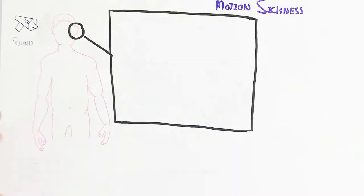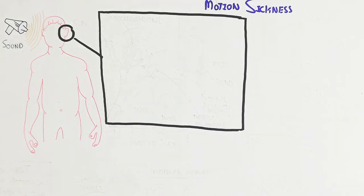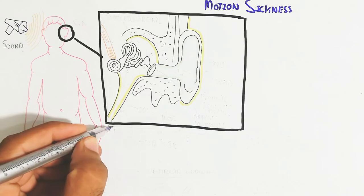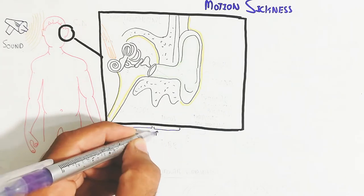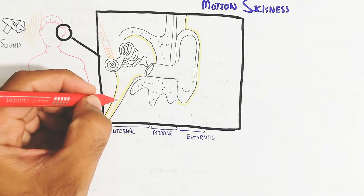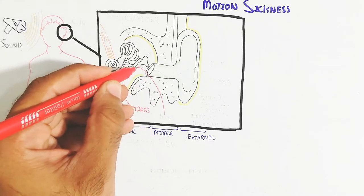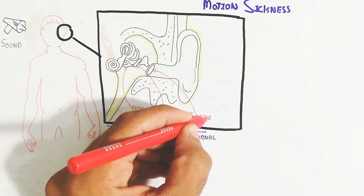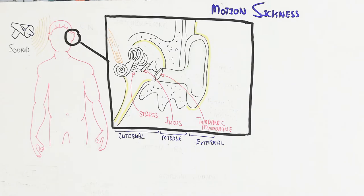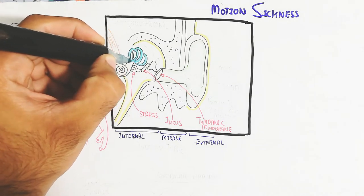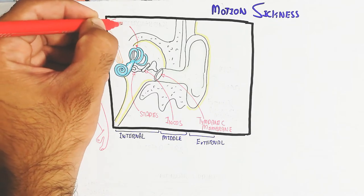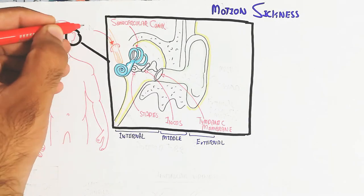The ear is basically involved in balance. The ear contains external, middle, and internal parts. The internal ear contains the cochlea and semicircular canal, while the middle ear contains the tympanic membrane and the ossicles — the smallest bones in the body: stapes, incus, and malleus. The malleus is directly attached to the tympanic membrane for vibration, and sound waves enter to vibrate the tympanic membrane and transmit the signal to the cochlea.